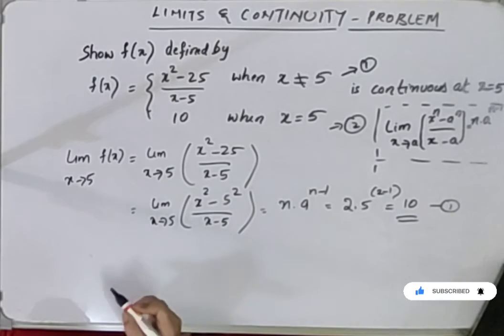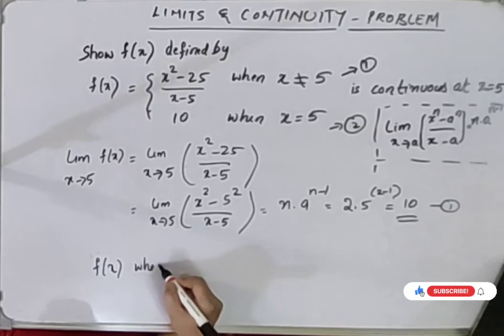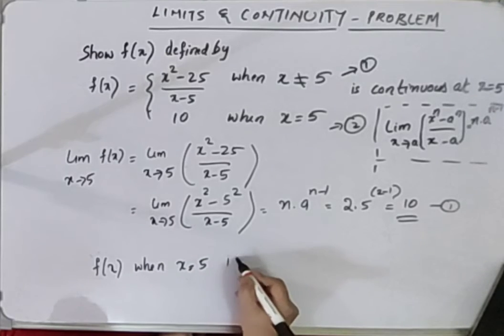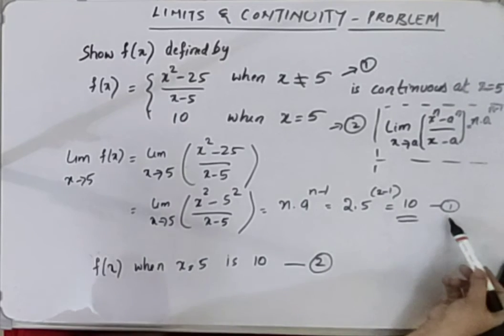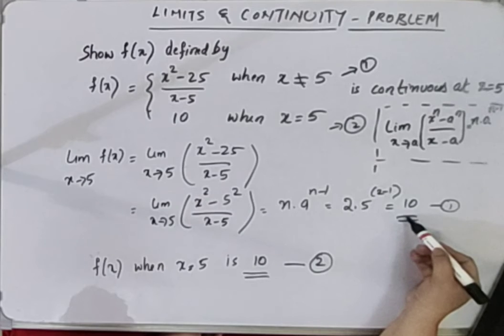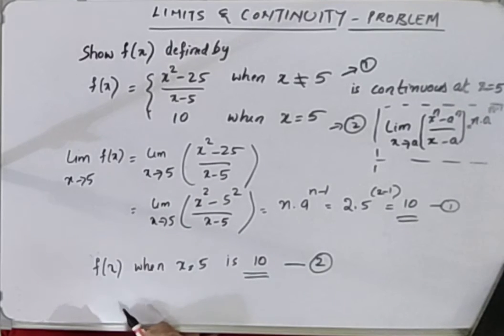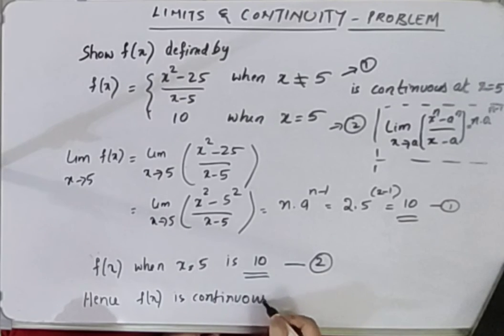The second equation, they have already told that f of x when x equals 5 is 10. Now equation 1 and equation 2 have the same values for f of x which is 10. Hence, f of x is continuous at x equals 5.